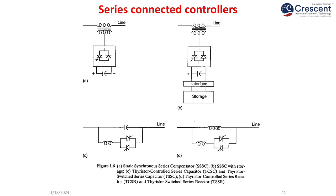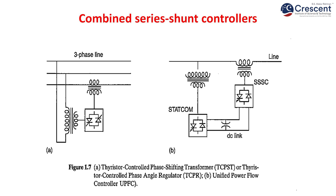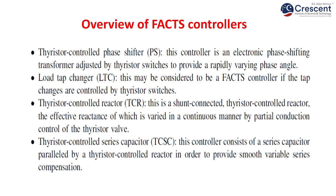Series-connected controllers with and without storage inject voltage into the line. The TCSE is a thyristor-controlled series controller, while TSSR is a thyristor-switched series controller. The difference is that in TSSR you can only switch on or off, whereas in TCSE you can have smooth control of power flow into the line. Combined series-shunt controllers utilize both: the shunt controller injects current into the system while the series controller injects voltage.